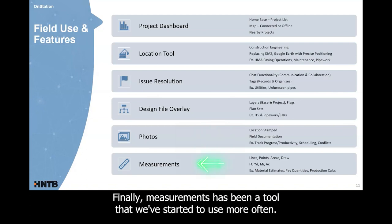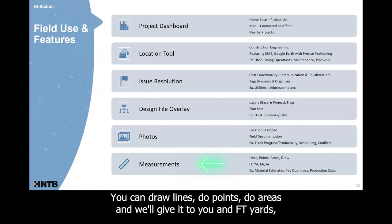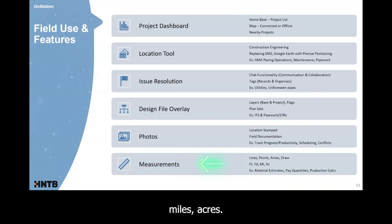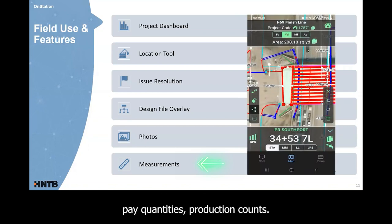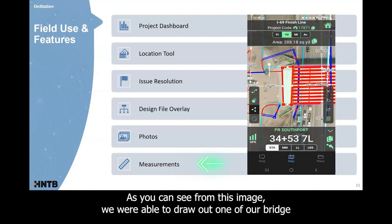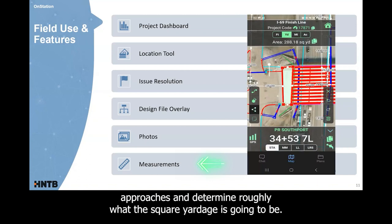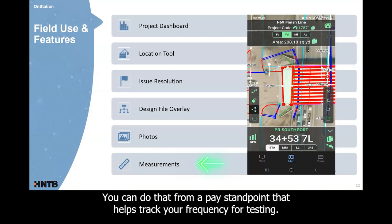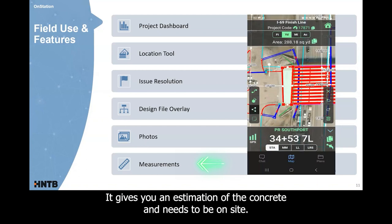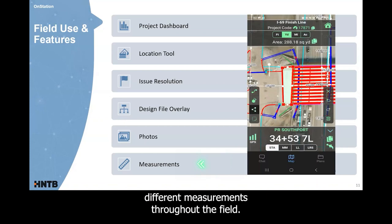Finally, measurements has been a tool that we've started to use more often. You can draw lines, do points, do areas. It'll give it to you in feet, yards, miles, acres. This is very helpful for material estimates, pay quantities, production calcs. As you can see from this image, we were able to draw out one of our bridge approaches and determine roughly what the square yard is going to be. You can do that from a pay standpoint that helps track your frequency for testing. It gives you an estimation of the concrete that needs to be on site and you can use that on all different aspects of the job to calculate different measurements throughout the field.